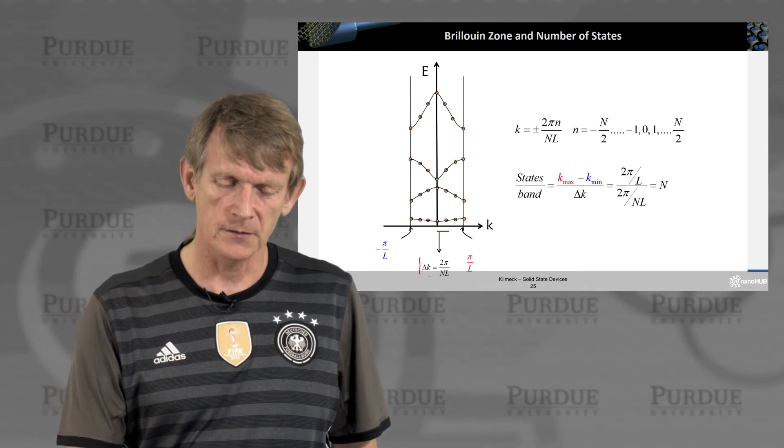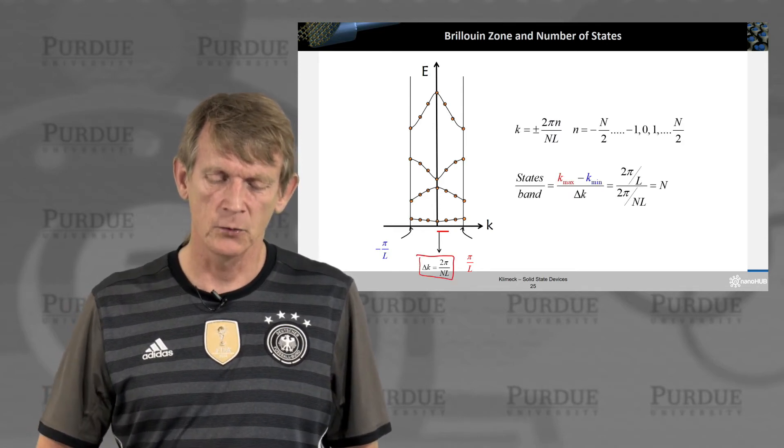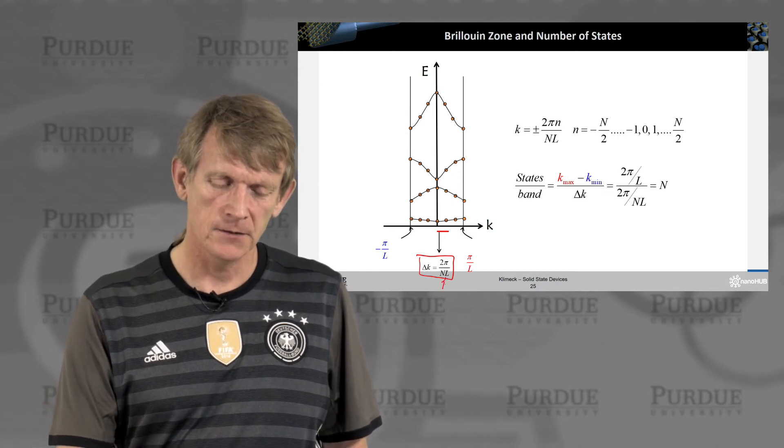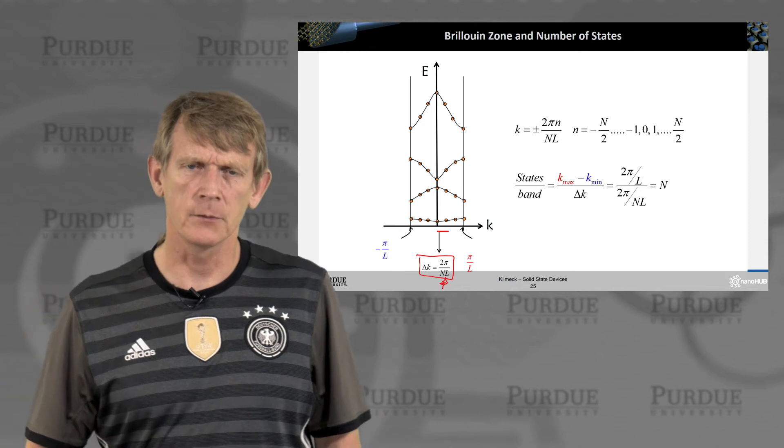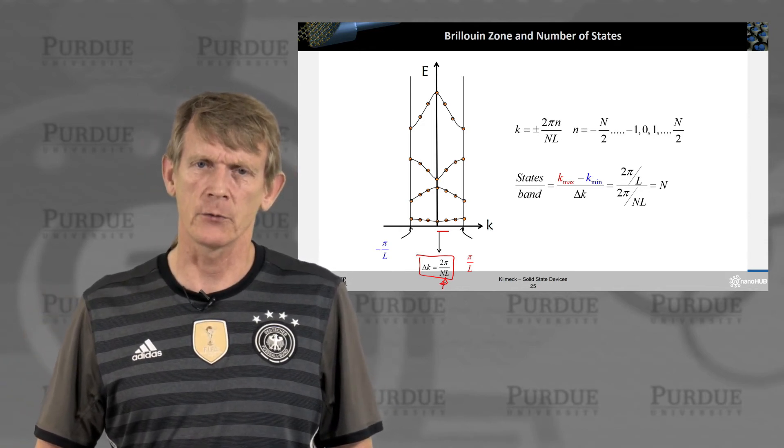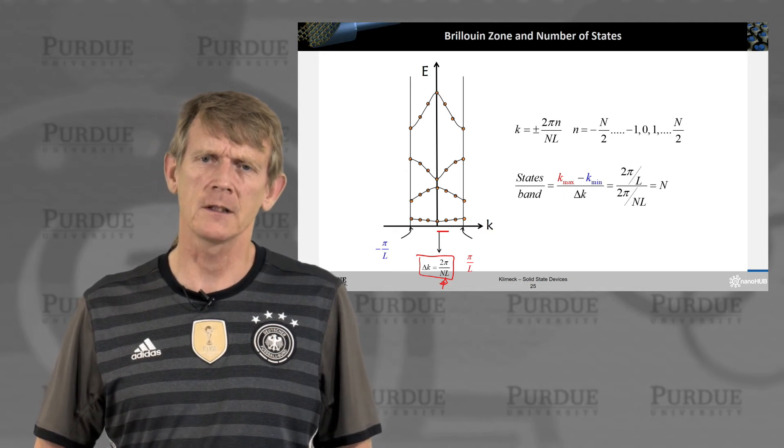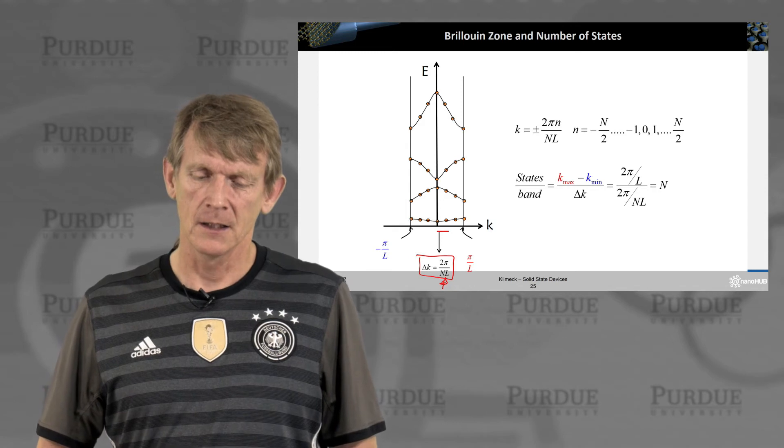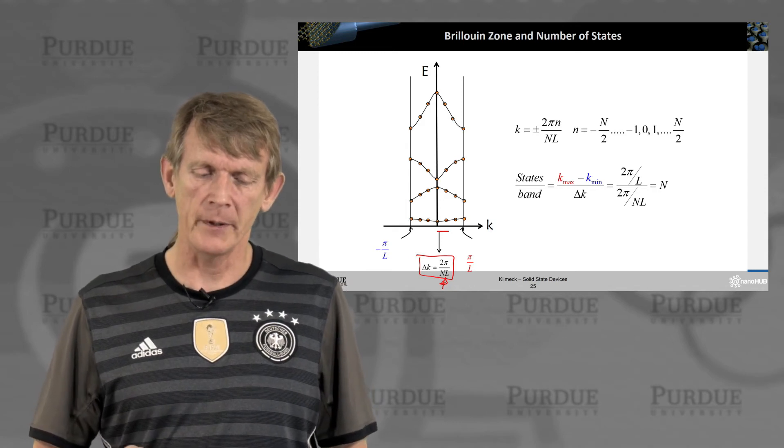These states are separated by a small delta k, 2 pi over NL. Where again, N is reasonably arbitrarily defined to be a large number. So this could be any large number that is the size of the ring, this thought experiment ring that you consider.